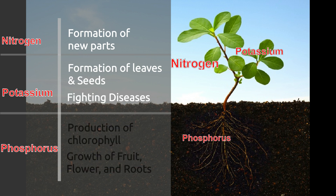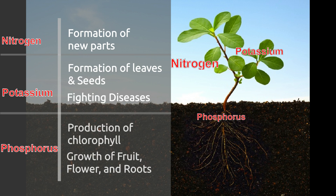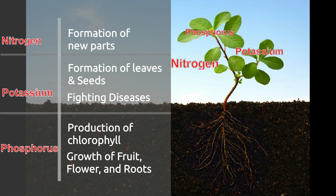Phosphorus plays a vital role in producing chlorophyll. Without chlorophyll, plants cannot perform photosynthesis. It also helps in the growth of fruits, flowers, and root system.